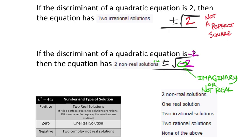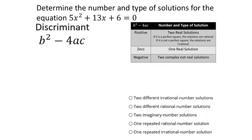Rational numbers are decimals that terminate or repeat, or values that can be written as a fraction — proper, improper, or mixed numbers. Now you're going to see multiple-choice problems like this one: determine the number and type of solutions for 5x squared plus 13x plus 6.